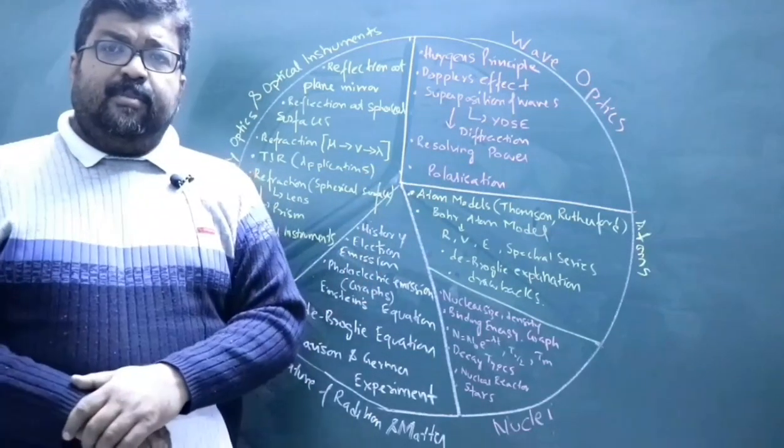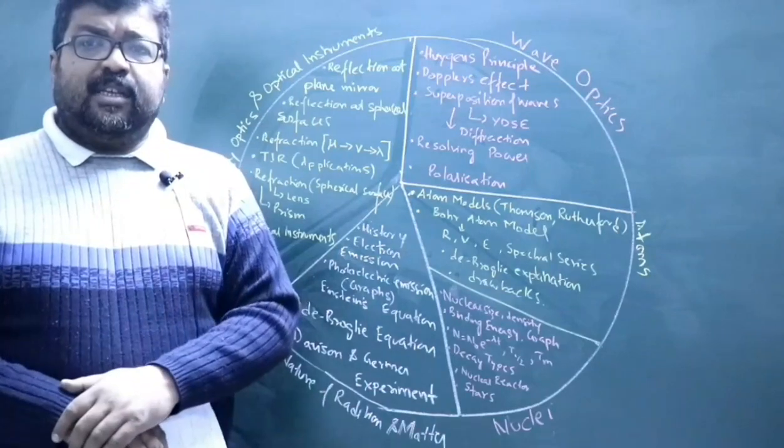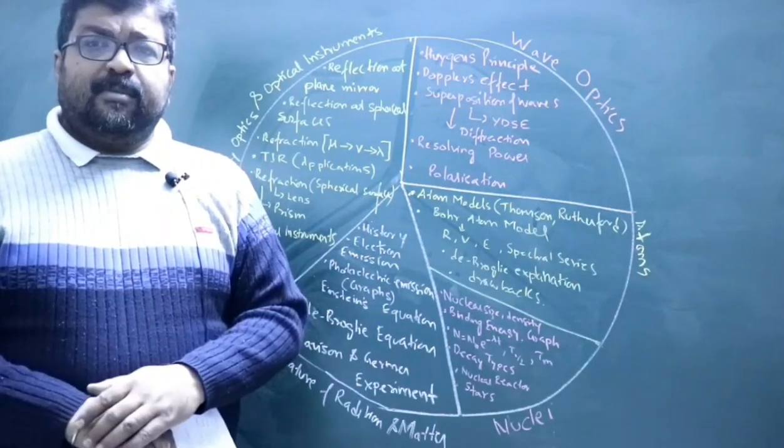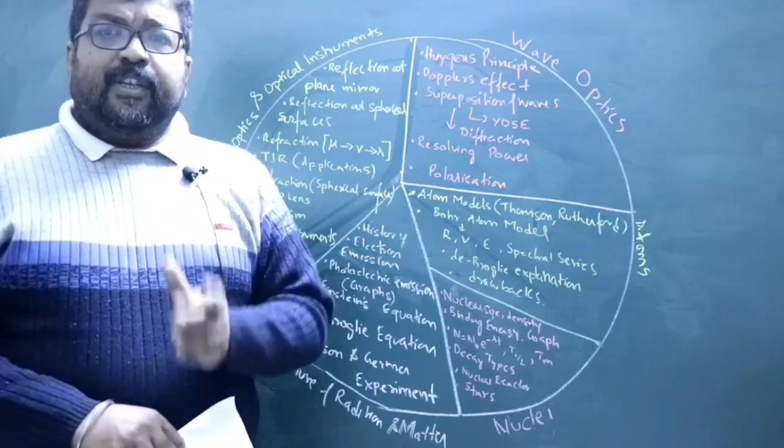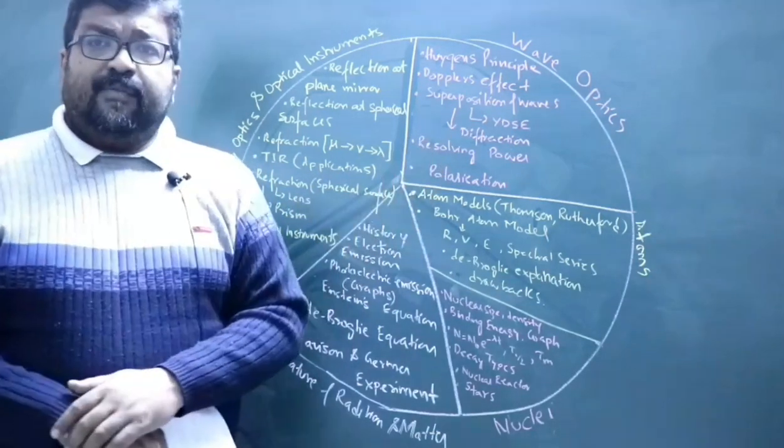Then you have superposition of waves, the principle of superposition of waves. Based on this, you have the Young's double-slit experiment - all the results of the Young's double-slit experiment including the fringe width and the angular width.